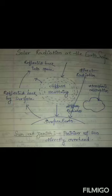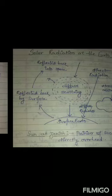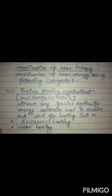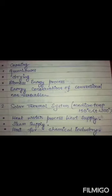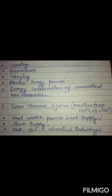The sun at the zenith position is directly overhead. Applications of solar energy fall into the following categories. First is the passive heating application — that is low temperature, meaning temperature is below 150 degrees centigrade, without any special device. The energy conversion receives and uses heat for such purposes as residential heating, water heating, cooking, greenhouses, drying, and biomass energy processes.